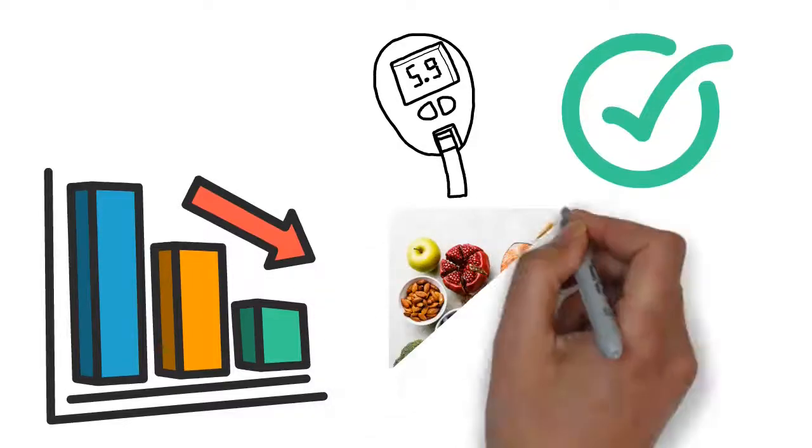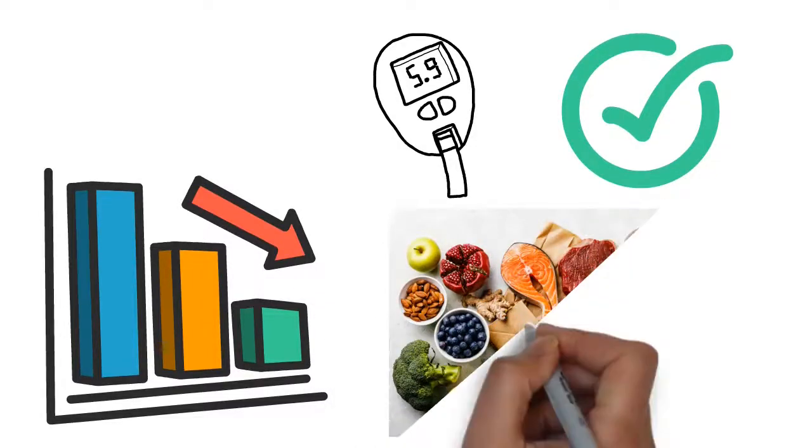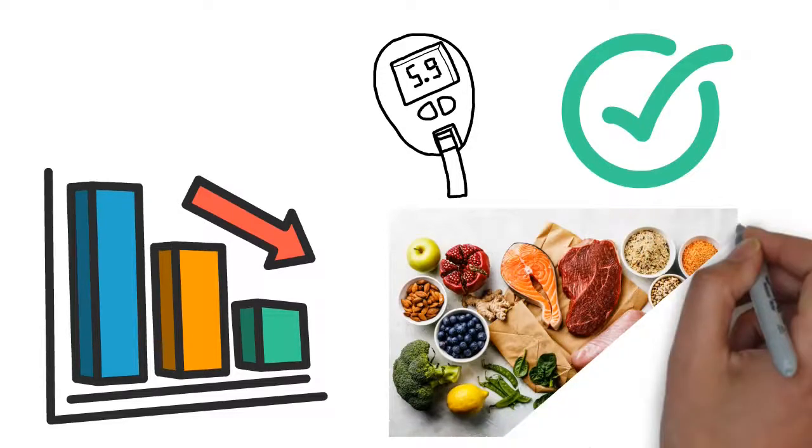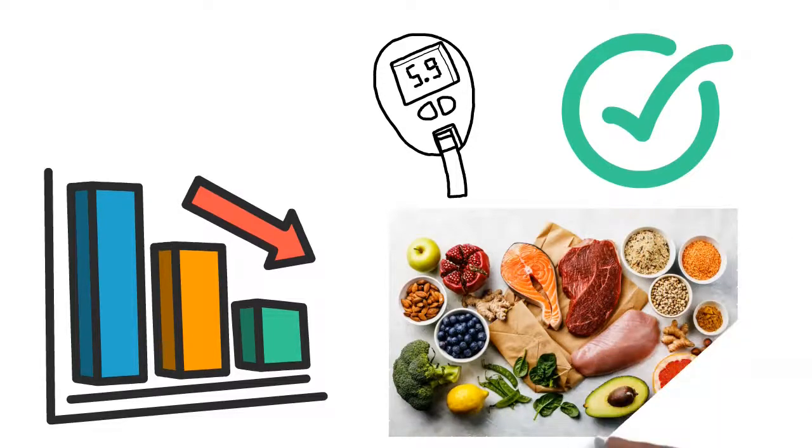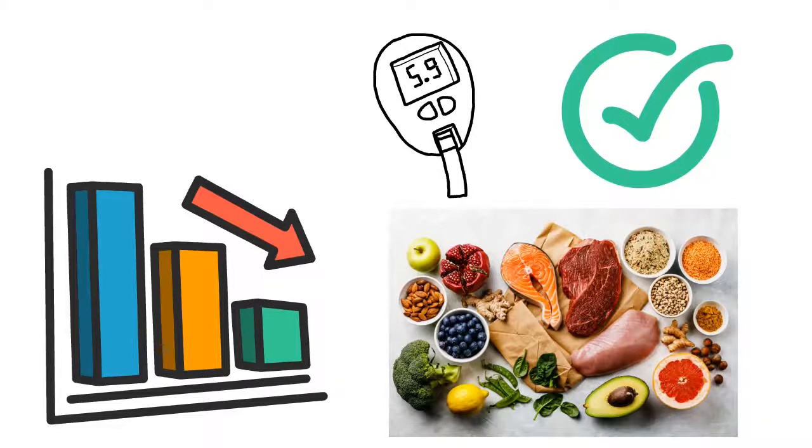This diet typically involves drastically reducing carbs and filling up on healthy fats and protein like fish, meat, nuts, almond butter, and other nut butters, as well as avocado and healthy oils.